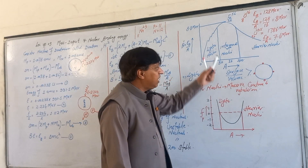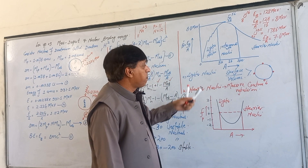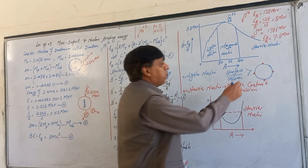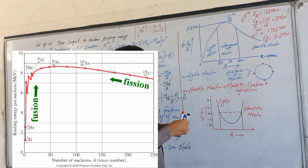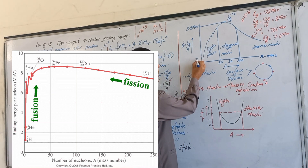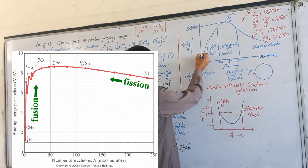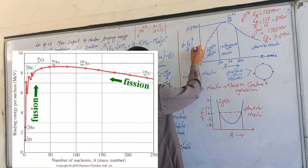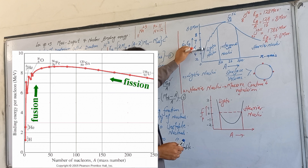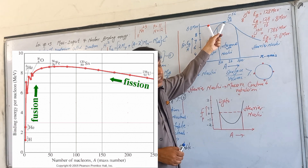Now turning to the graph: we plot binding energy per nucleon along the y-axis and mass number along the x-axis. As mass number increases, binding energy per nucleon increases — from about 1.1 MeV for deuteron (mass number 2), rising through 4, 6, 7, and up to 8.8 MeV at the peak. This is a slow and steady increase reaching the maximum value.